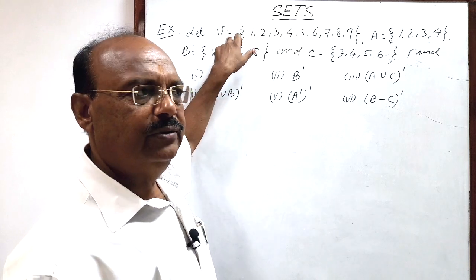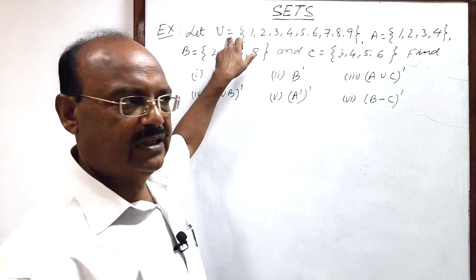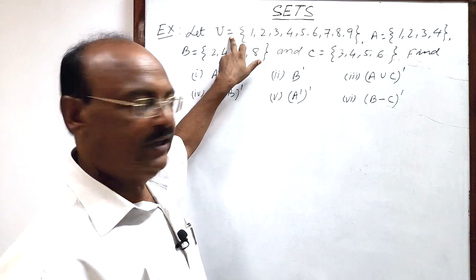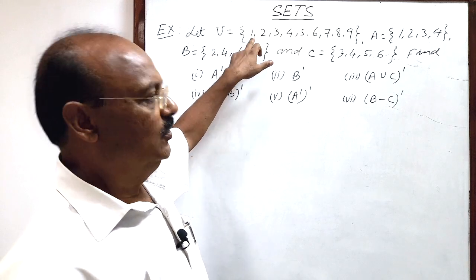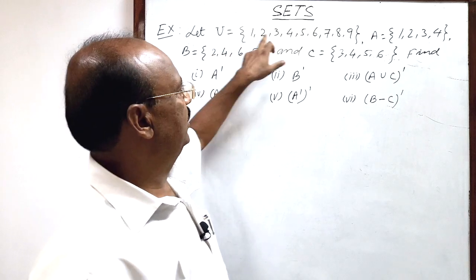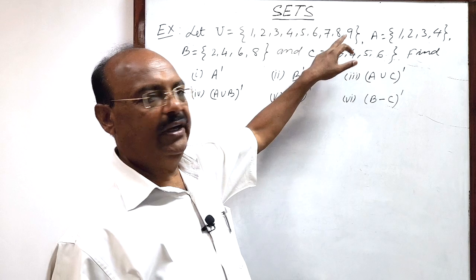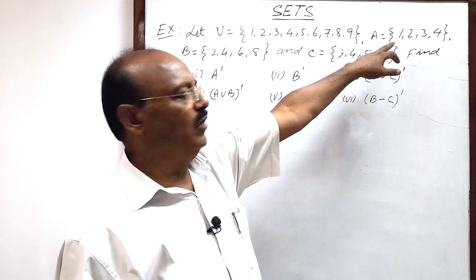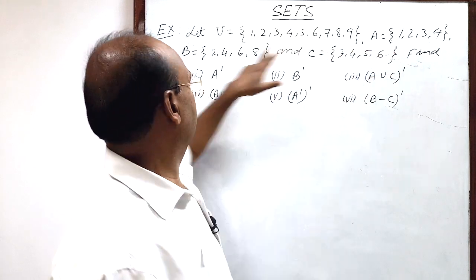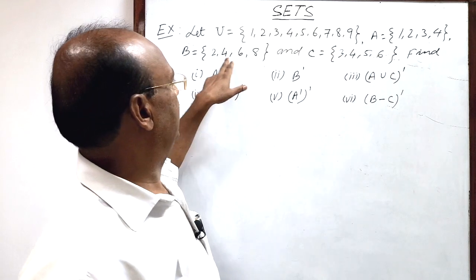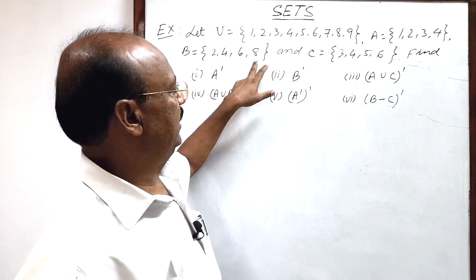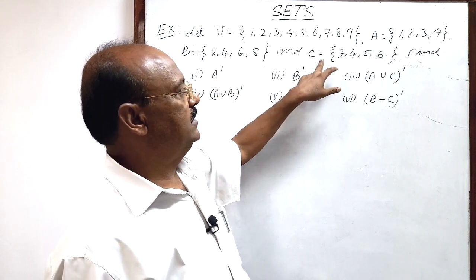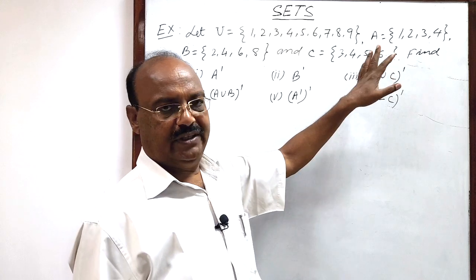Let U — U is the universal set. So, let the universal set have elements 1, 2, 3, 4, 5, 6, 7, 8, 9. Set A is having elements 1, 2, 3, 4. Set B is having elements 2, 4, 6, 8.